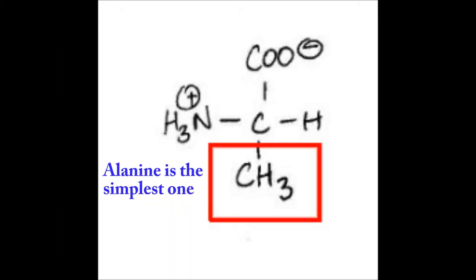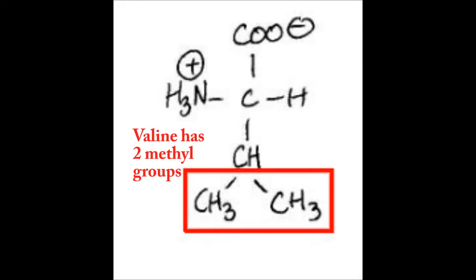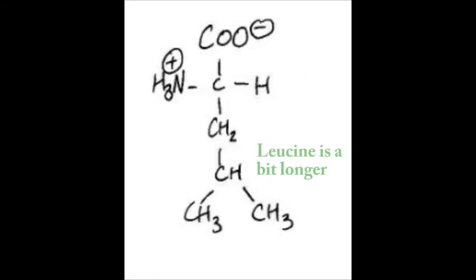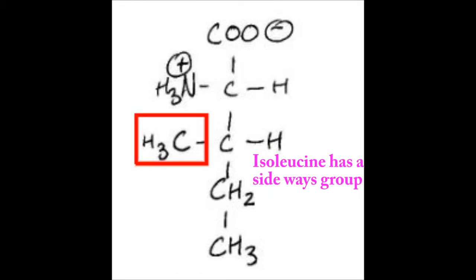Alanine is the simplest one. Valine has two methyl groups. Leucine is a bit longer. Isoleucine has a sideways group.